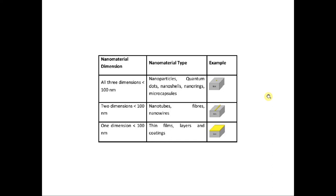How do we classify nanomaterials? Suppose I consider a bulk material in 3 dimensions — x, y, and z: length, breadth and height. If I reduce the dimension in one direction by less than 100 nanometers, that means one of the dimensions becomes less than 100 nanometers, and I will get a structure like a film or a layer of a substance. You call it a nano film, thin film, thin layer, or thin coating.